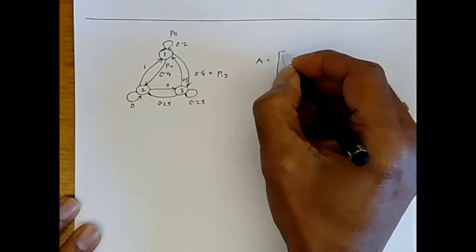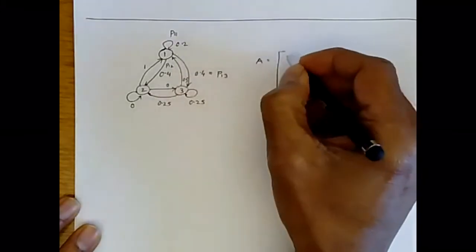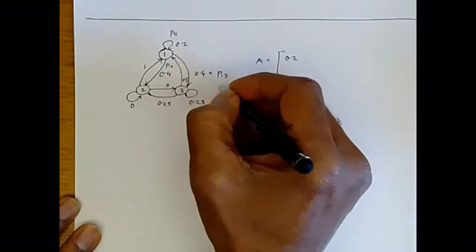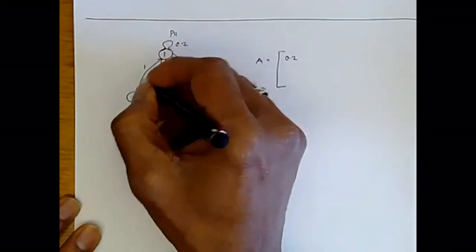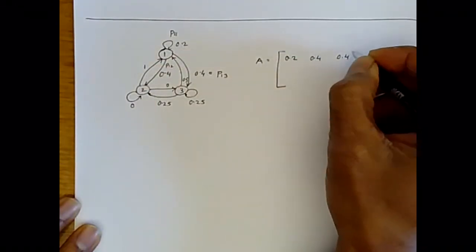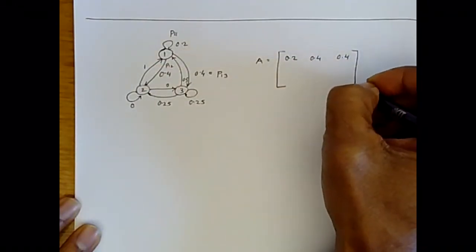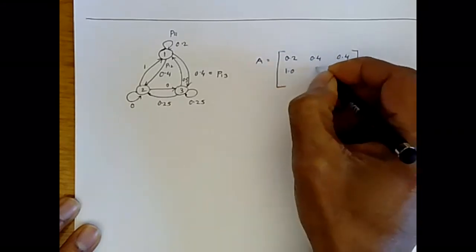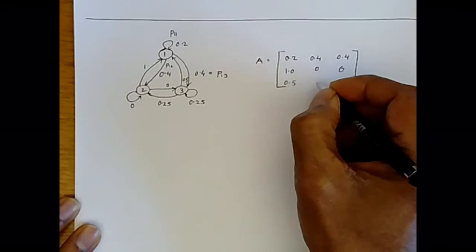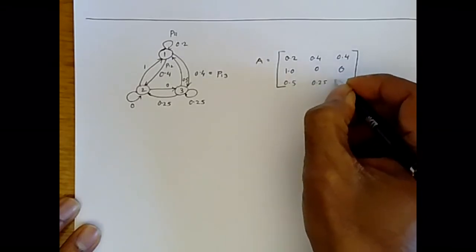P11 is 0.2, so we put 0.2 over here. P12 is 0.4, so it's 0.4 over here. P13 is 0.4. And if you read off the other probabilities, we get 1.0, 0, 0.5, 0.25, 0.25.